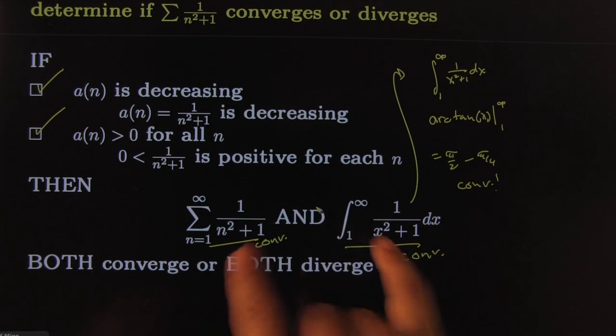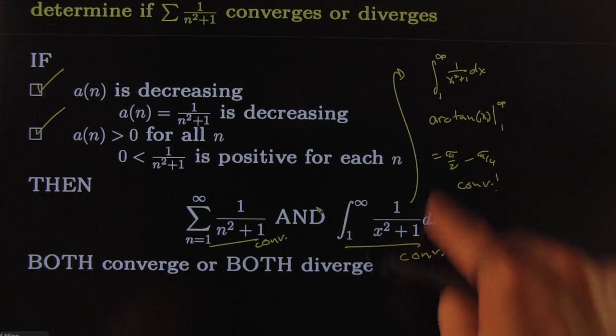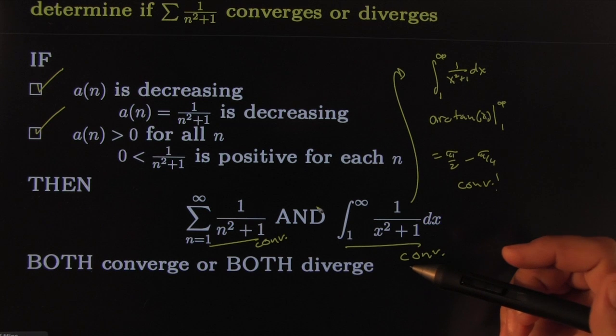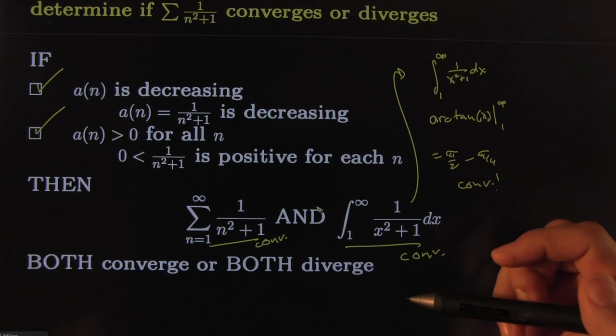These two conditions tie them together. They say they both converge or both diverge. And the actual computation of this one says this one converges, and then we're done. All right, come back for another one. See you guys.